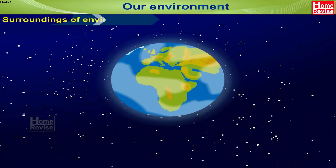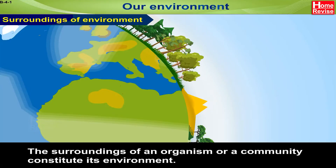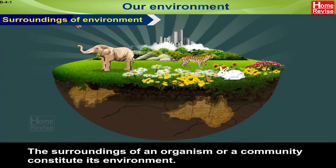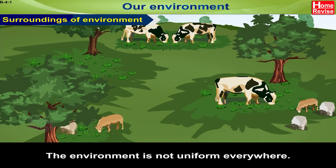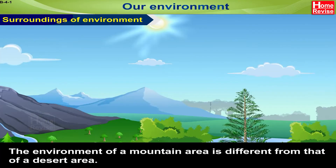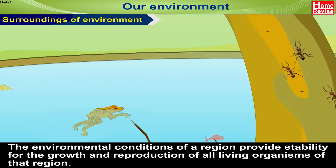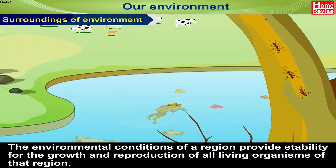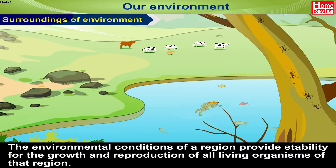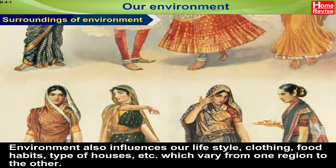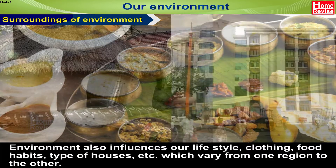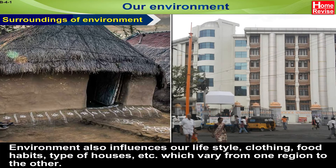The surroundings of an organism or a community constitute its environment. The environment is not uniform everywhere — the environment of a mountain area is different from that of a desert area. The environmental conditions of a region provide stability for the growth and reproduction of all living organisms. Environment also influences our lifestyle, clothing, food habits, and type of houses, which vary from one region to another.